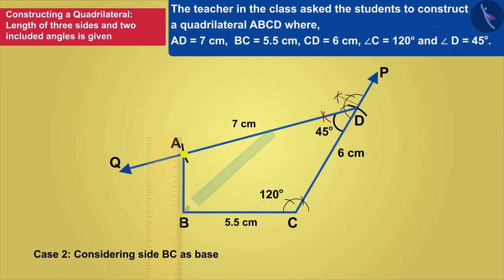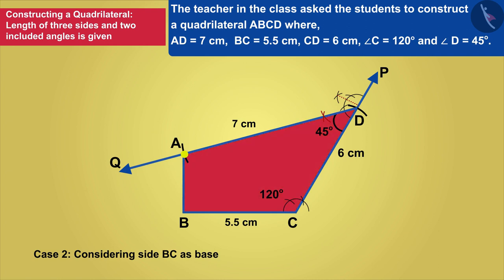In this way, the quadrilateral ABCD will be formed by joining the points A and B.